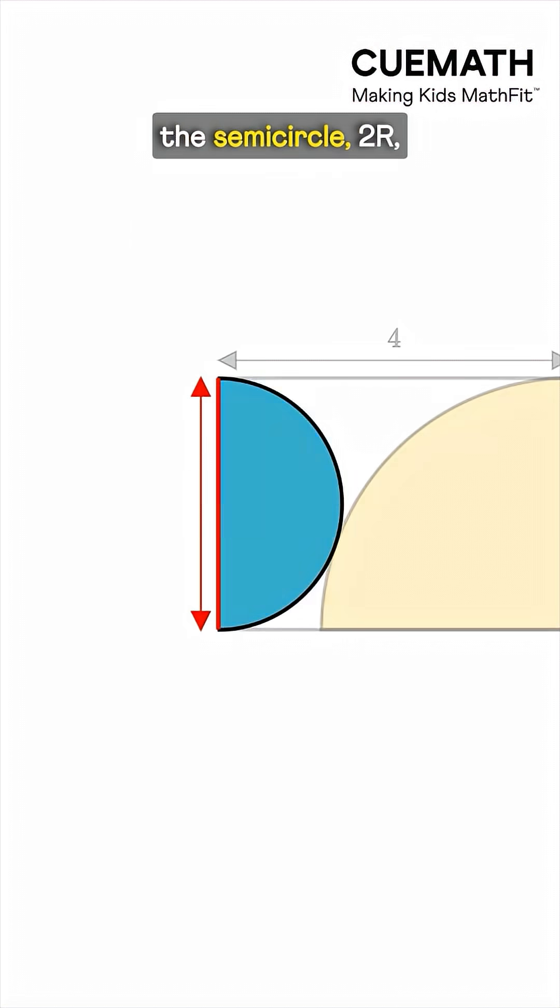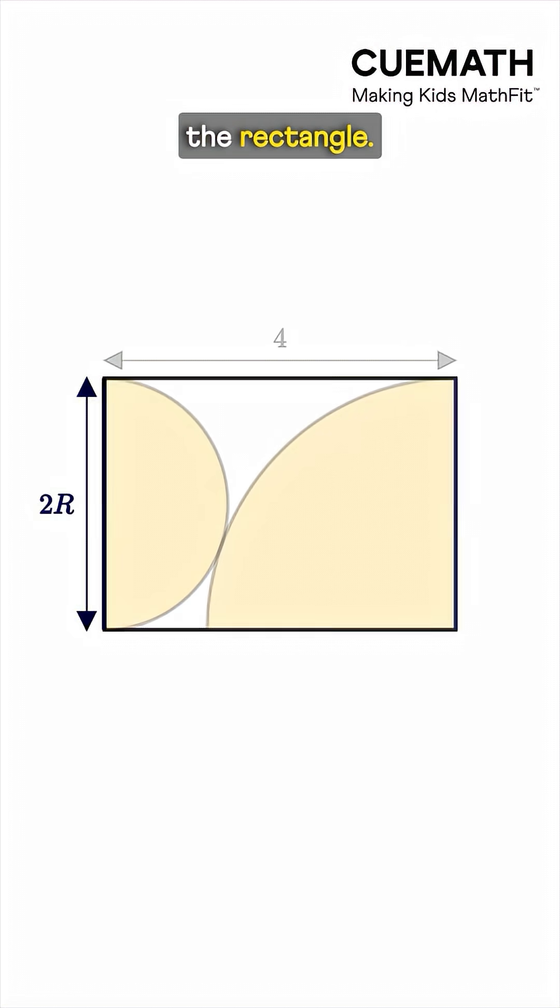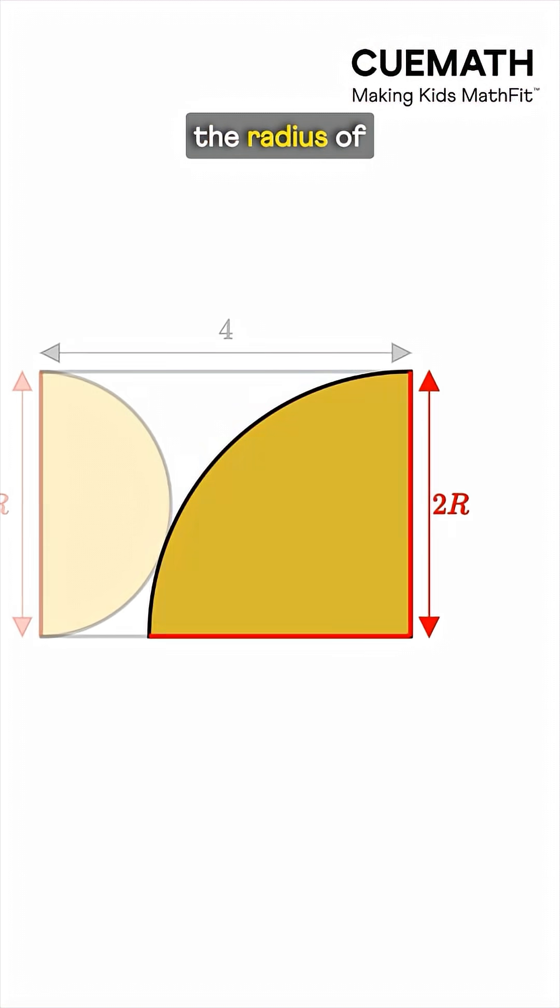The diameter of the semicircle, 2r, equals the height of the rectangle. Notice that this height, 2r, is also the radius of the quarter circle.